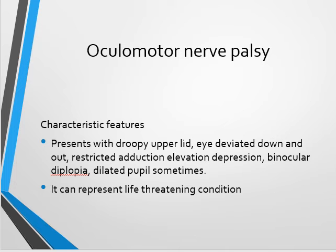It is very important to remember what muscles are supplied by the oculomotor nerve, that is the third cranial nerve. It supplies all the extraocular muscles of the eye except the lateral rectus, which is supplied by the sixth nerve, and the superior oblique, which is supplied by the trochlear nerve, that is the fourth cranial nerve.